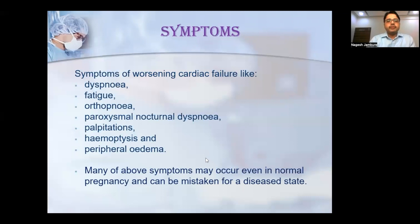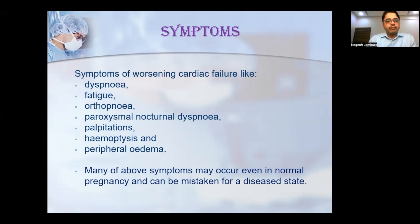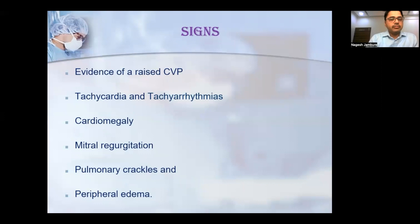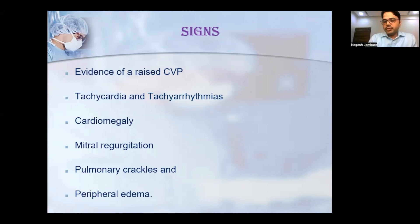Symptoms of peripartum cardiomyopathy are similar to those common during normal pregnancy, but must be carefully assessed: dyspnea, fatigue, orthopnea, paroxysmal nocturnal dyspnea, palpitation, hemoptysis, and peripheral edema. Signs present include elevated jugular venous pressure, tachycardia, arrhythmias, shifting of the apex impulse, parasternal heave, murmurs due to mitral or tricuspid regurgitation, pulmonary crackles, and peripheral edema.